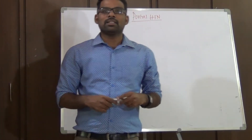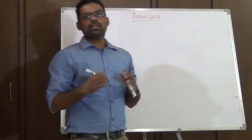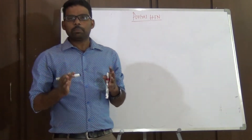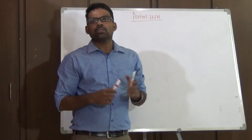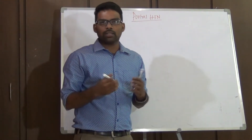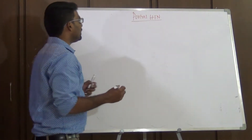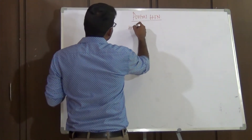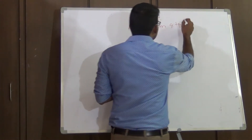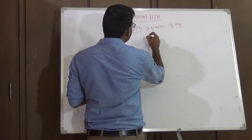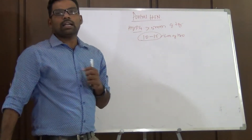Hi friends, this is Dr. Pratap. Today I will be discussing about portal hypertension. So what do we mean by portal hypertension? When the pressure in the portal system or in the portal vein is increased beyond a certain limit, we call it portal hypertension. That limit depends on how we measure it: if measured in millimeters of mercury, the hepatic venous pressure gradient more than 5 mmHg defines portal hypertension; in centimeters of water, the normal is 10 to 15 cm, and above that is portal hypertension.